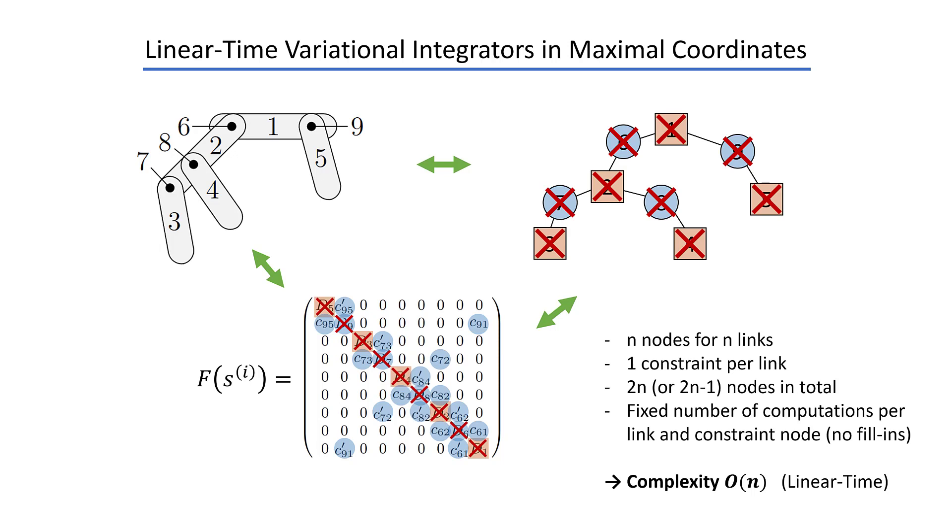Note that for systems with closed kinematic loops, we sometimes can remove nodes without creating fill-ins, and so the complexity is no longer linear, but we can still get pretty good results.